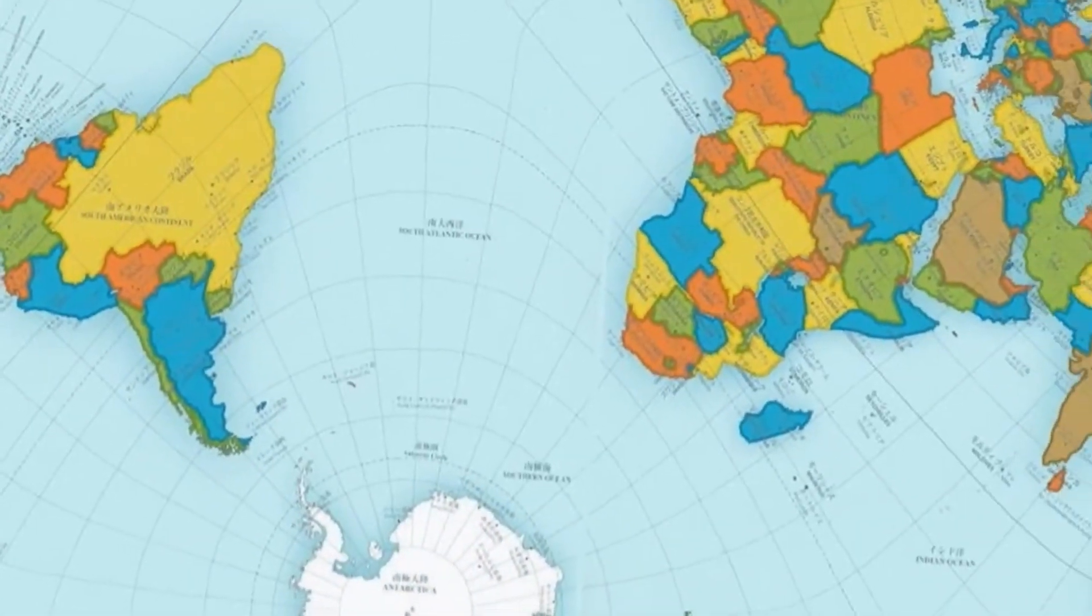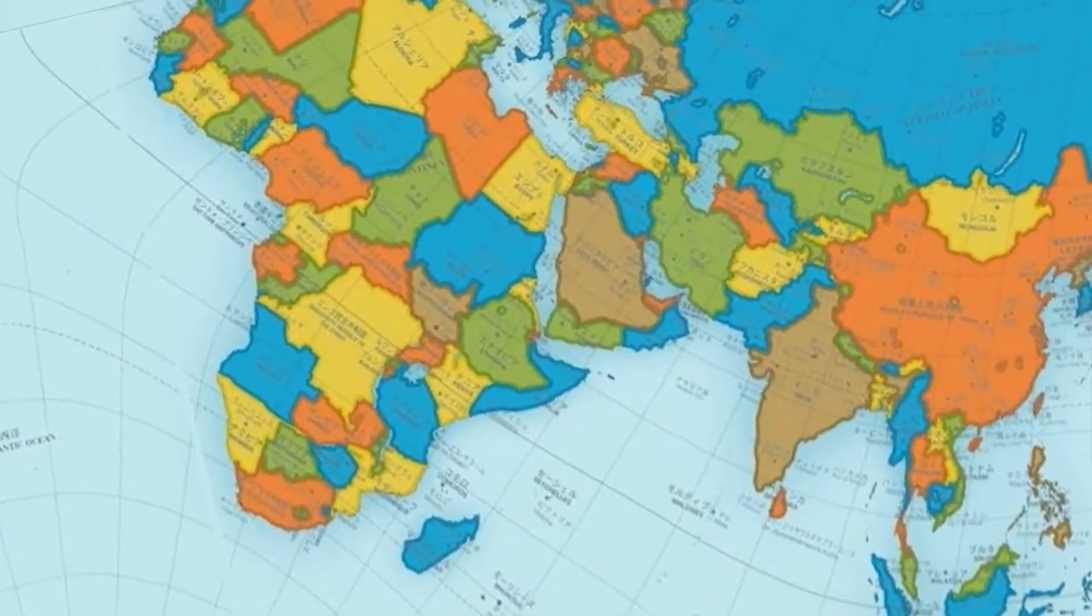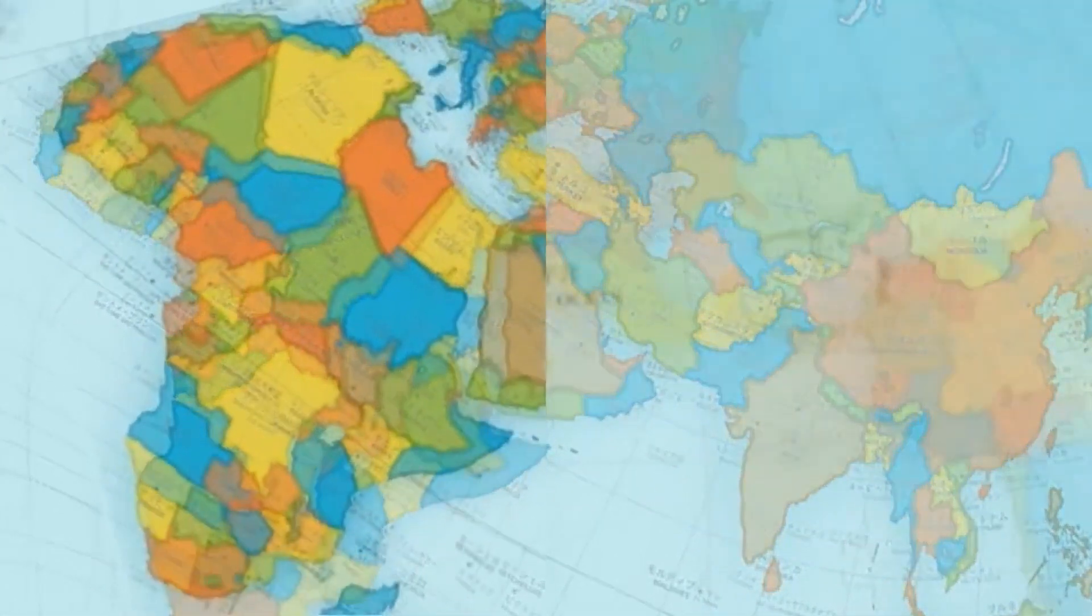Although it is one of the best attempts to construct an extremely accurate map, it still has significant distortions in areas such as Brazil and Australia.